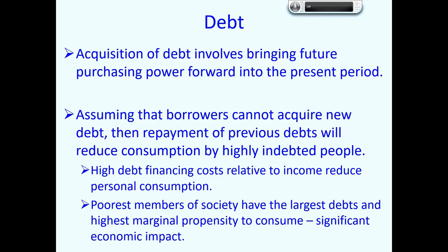The poorest members of society not only have the largest debts and therefore the highest debt financing costs relative to their incomes — they also have the highest marginal propensity to consume. Marginal propensity to consume refers to the proportion of any additional income that the individual consumes. Poor members of society tend to consume a large proportion of any additional income they receive. Similarly, a significant reduction in their income causes them to significantly reduce their consumption, and if that happens on a large scale in the economy, it can have a significant economic impact.